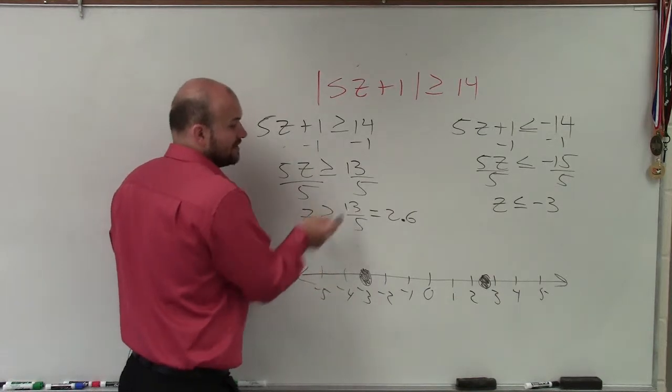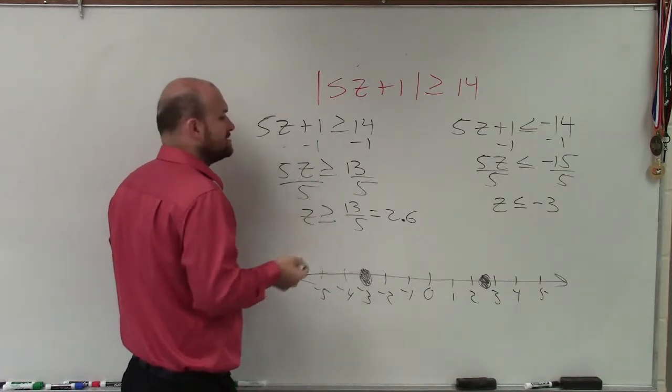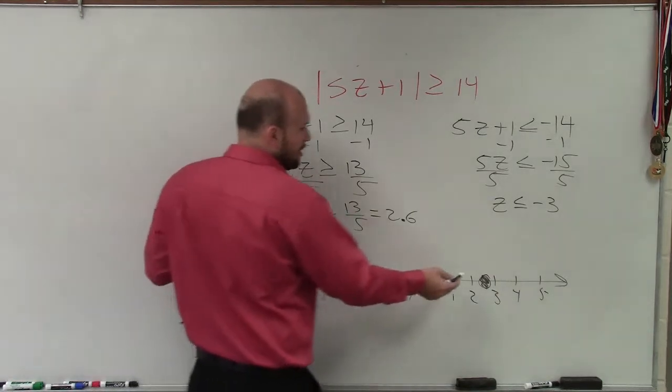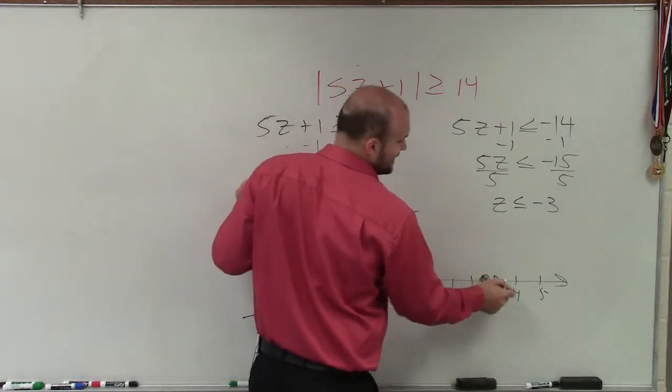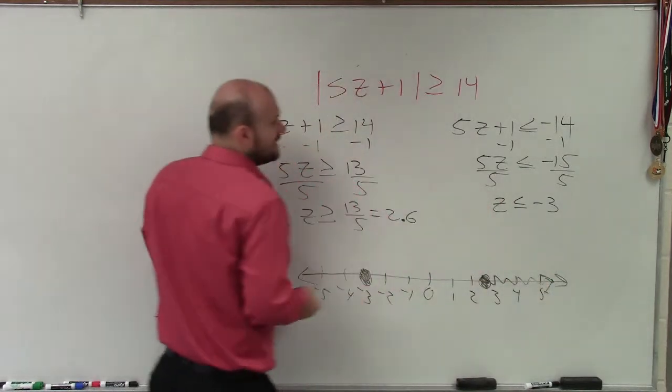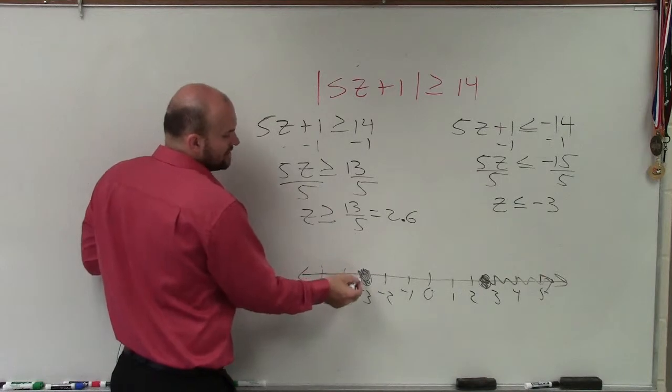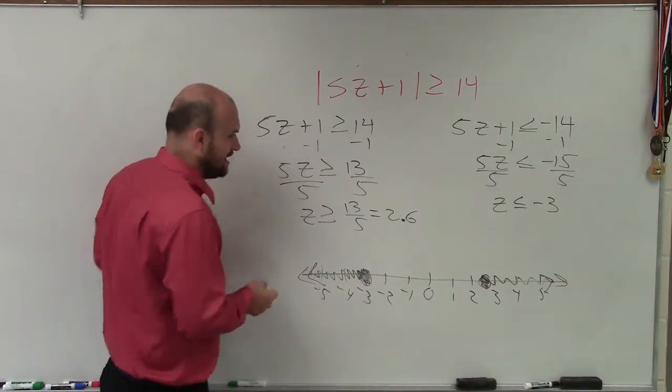Then it says greater than or equal to 2.6, so that means all the values that are larger than 2.6. Well, that's going to be all the numbers to the right. And then this is less than or equal to negative 3, so that's going to be all numbers that are less than or equal to negative 3, which are going to be to the left.